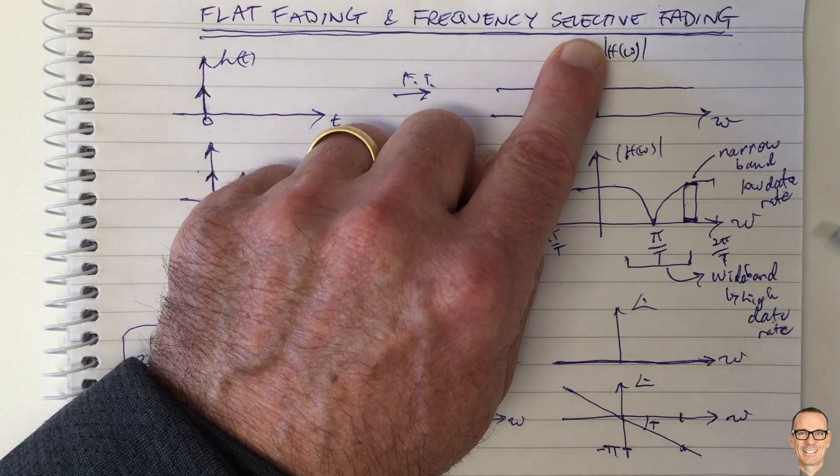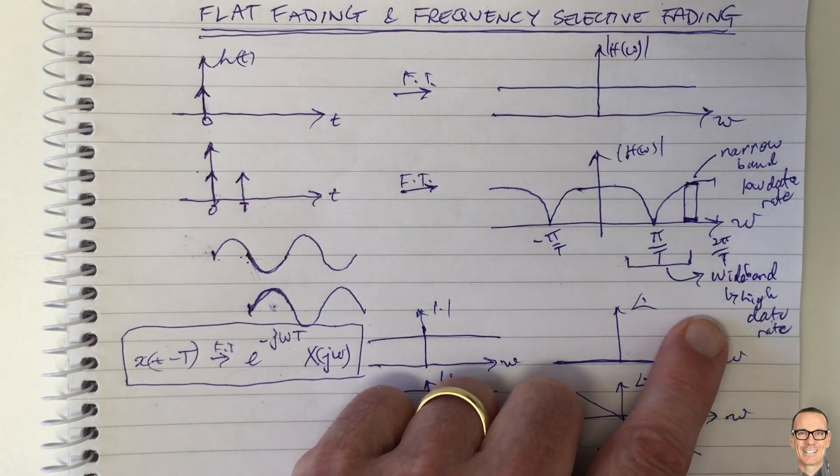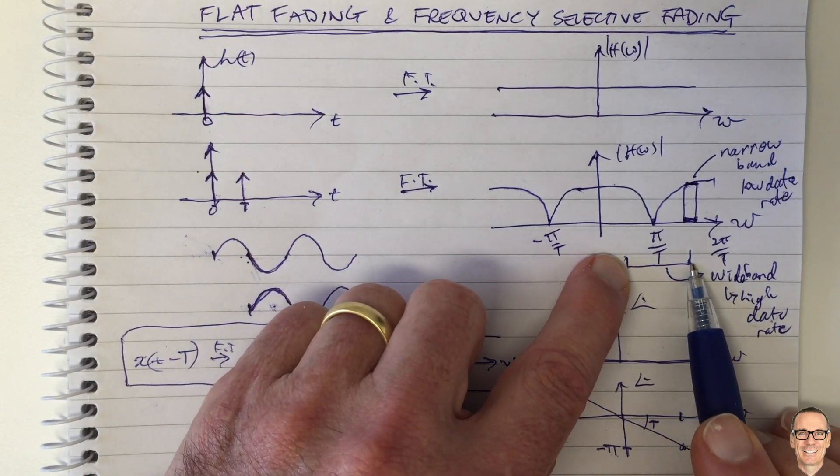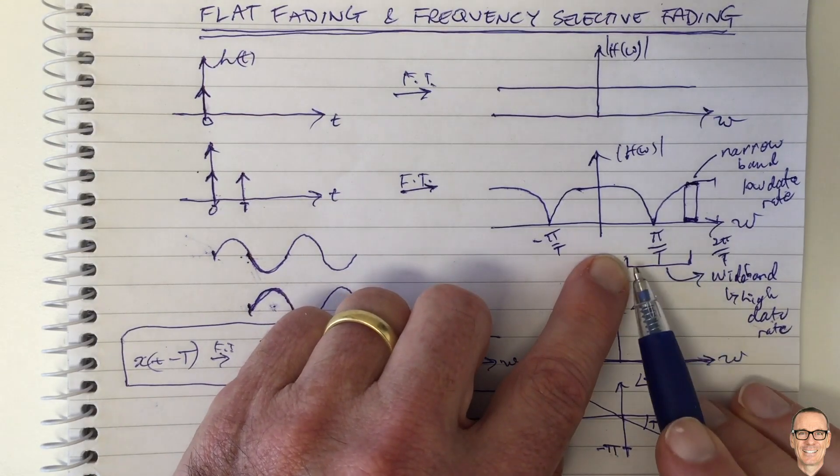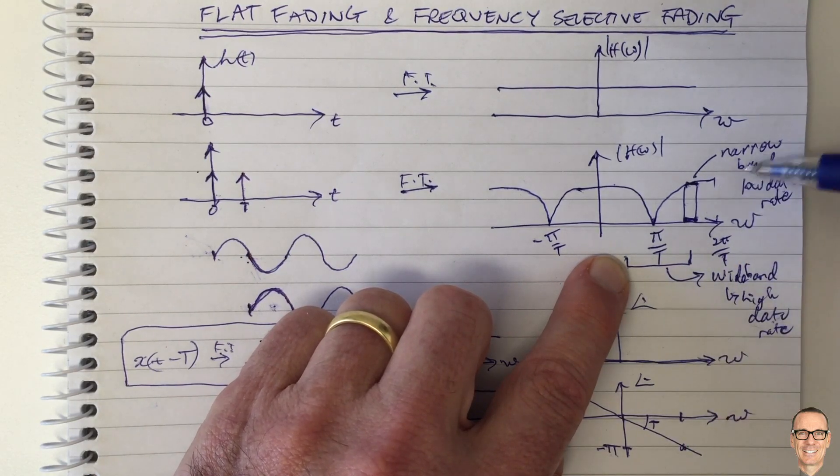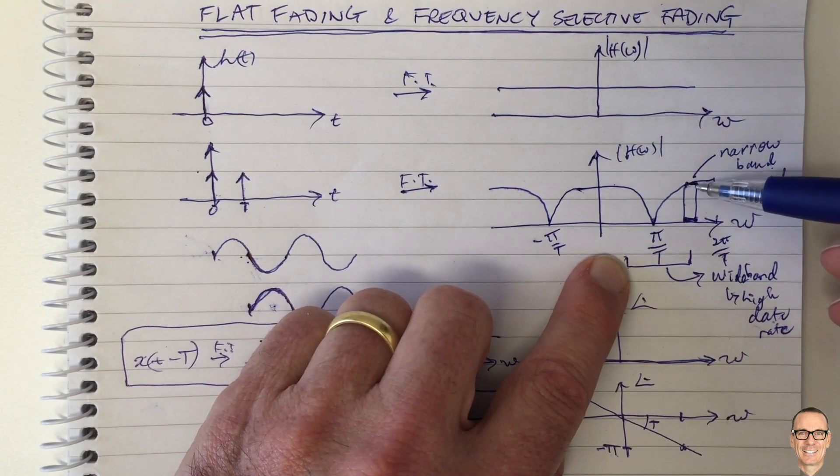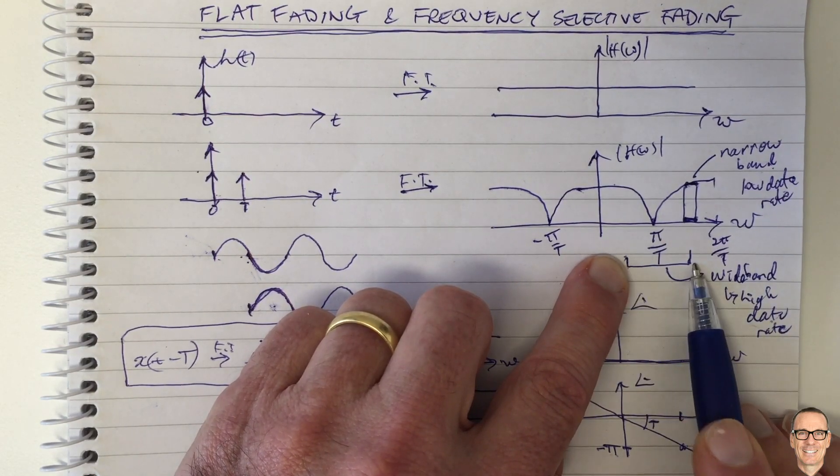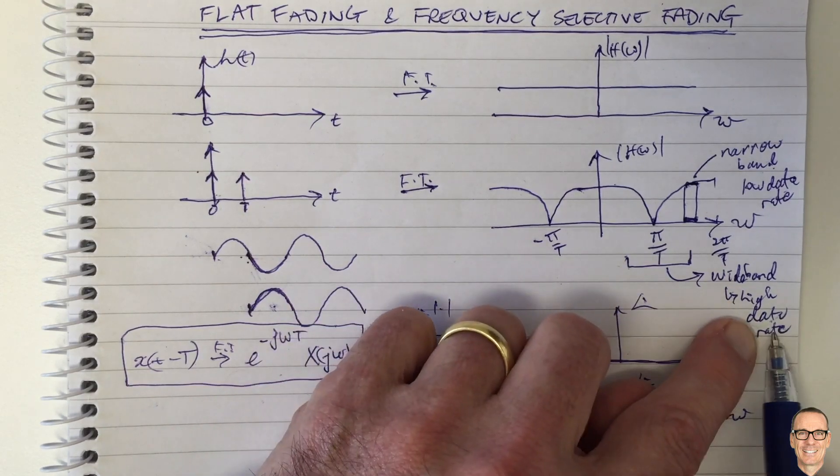And the one anomaly here probably is OFDM. If you have OFDM, you are using a wide bandwidth. But because you are using parallel sub channels, each parallel sub channel is narrow band. And so in the parallel sub channels, it is narrow band fading. Even though overall, you are using, you are sending a high data rate signal.